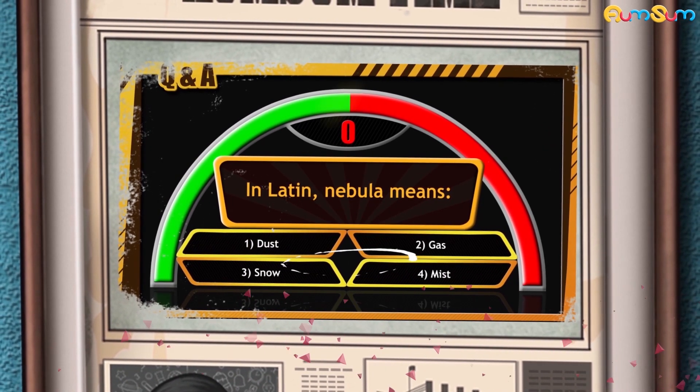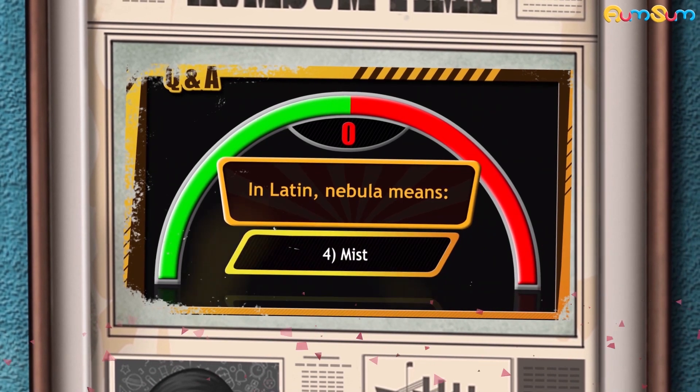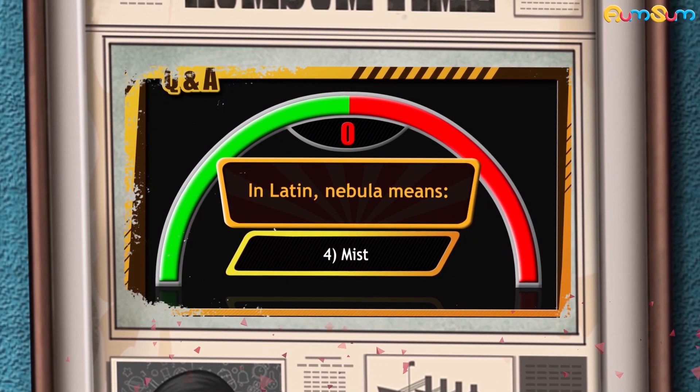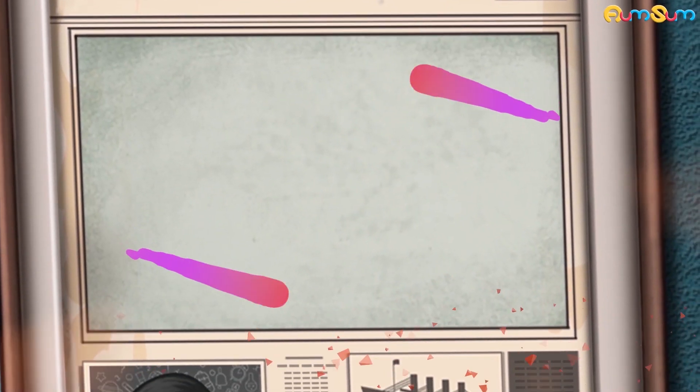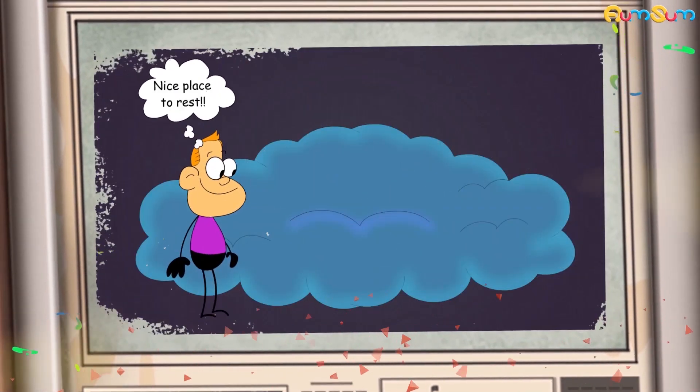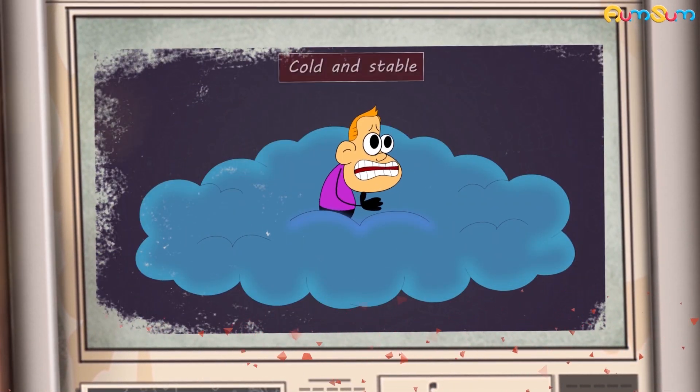The correct answer is option number 4, that is mist. Let's get back to our video. Normally, these molecular clouds are cold and stable.